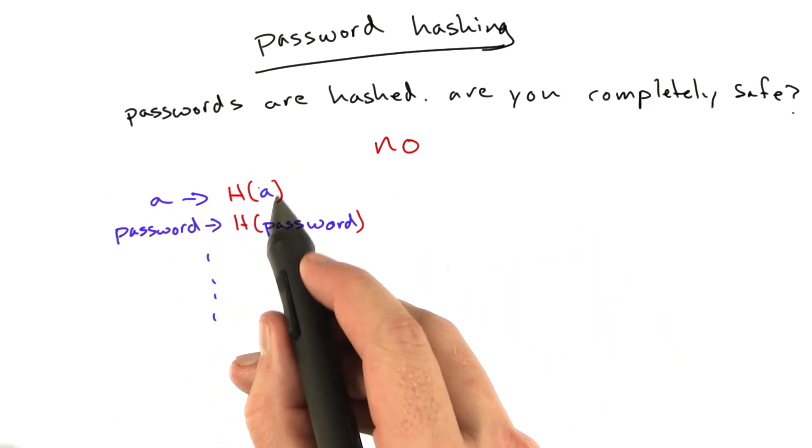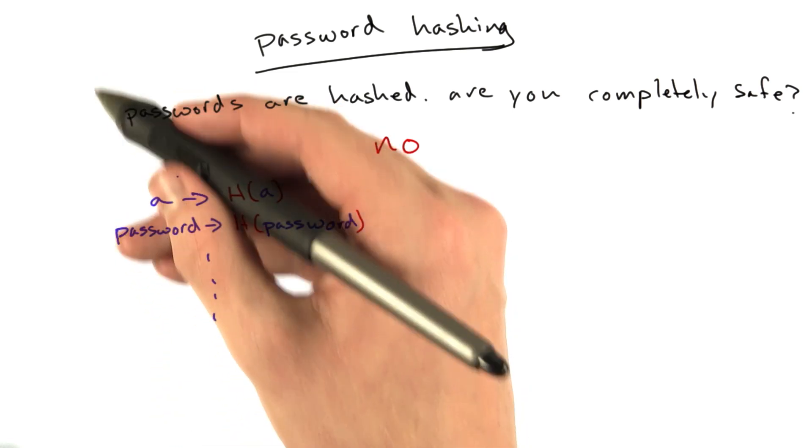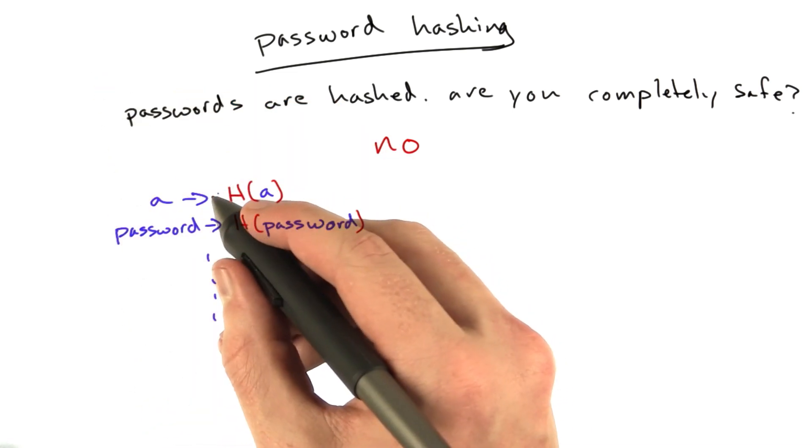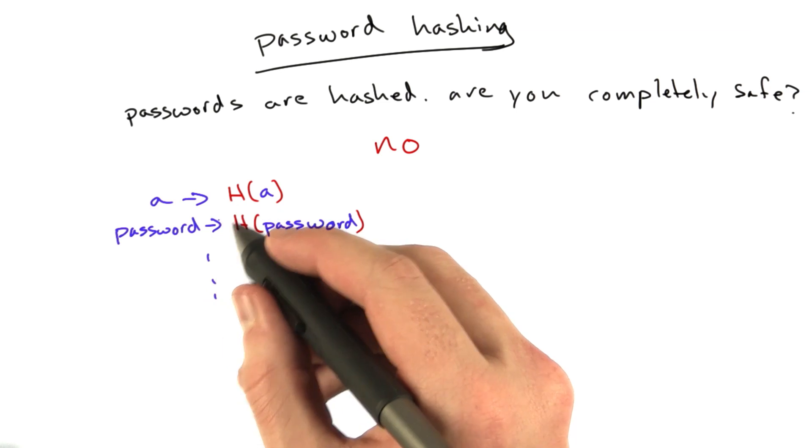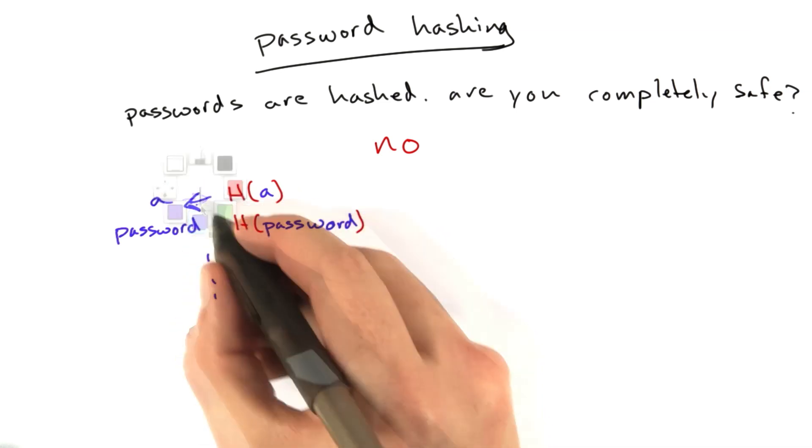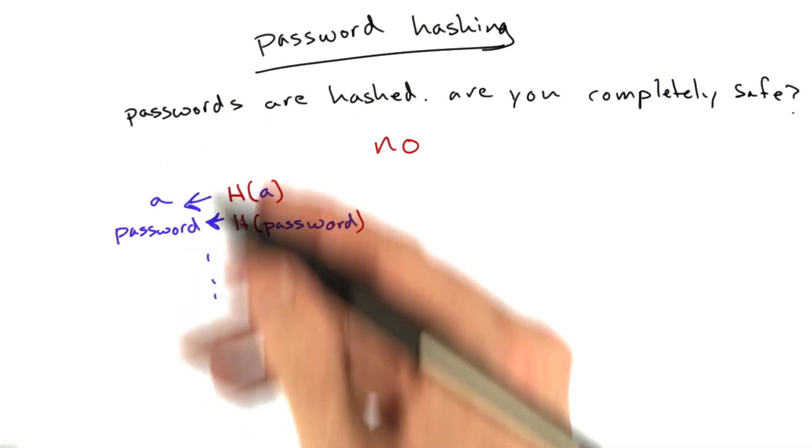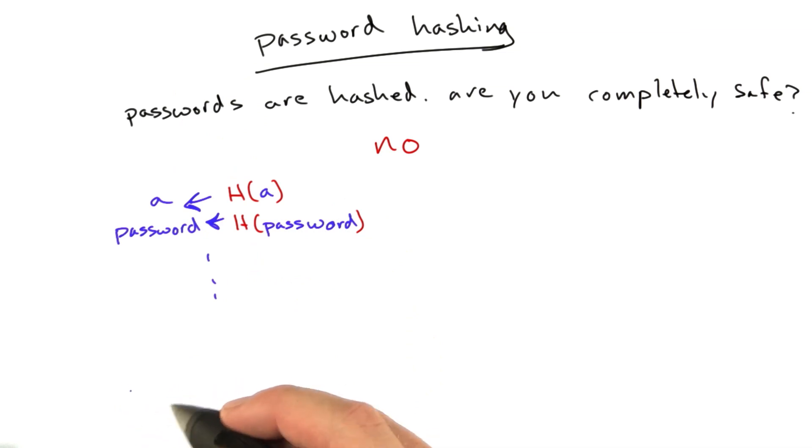If you have H of A, the hash of A, it's really hard to figure out A. But if you've already computed it for every word and all you have to do is compute it once and create the inverse table, once somebody has this table of all these words computed once, they're done.